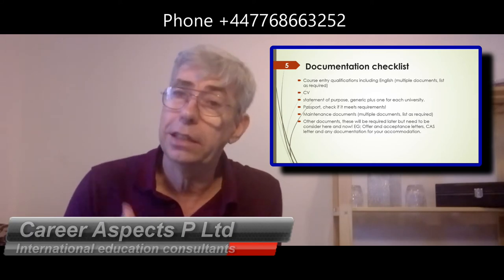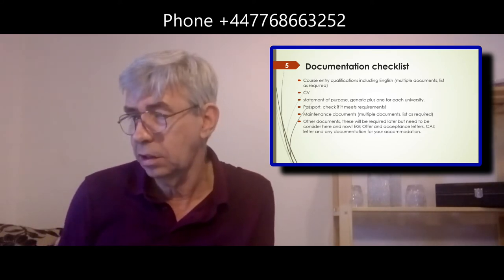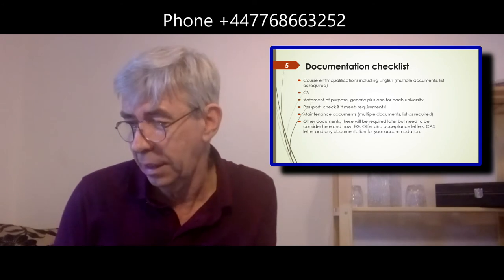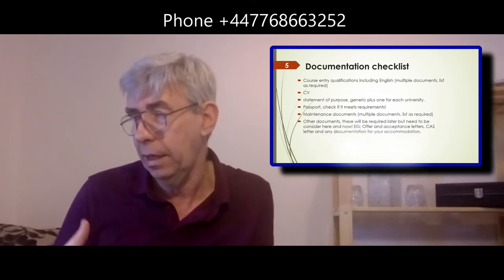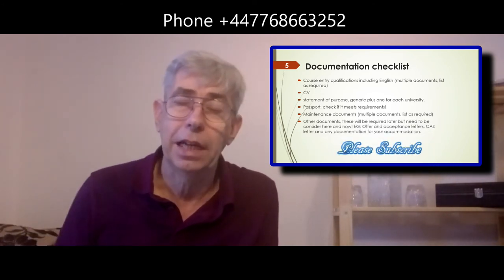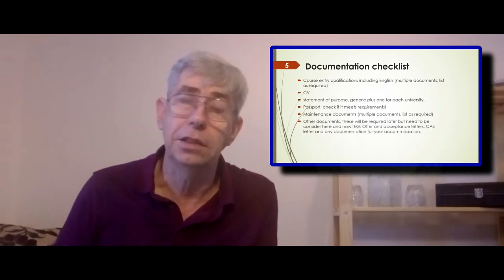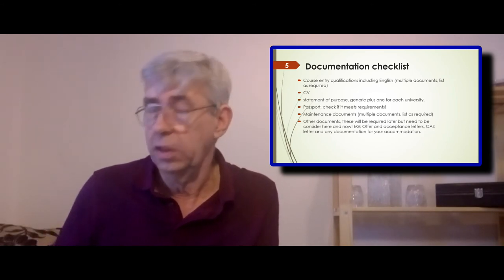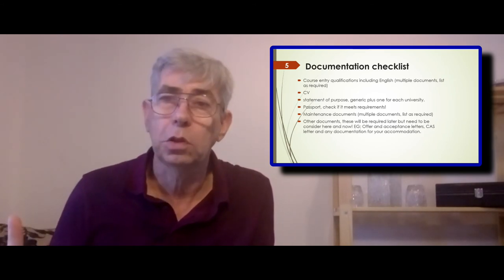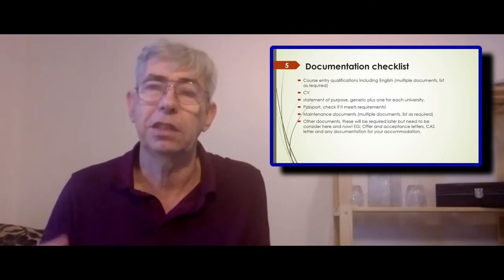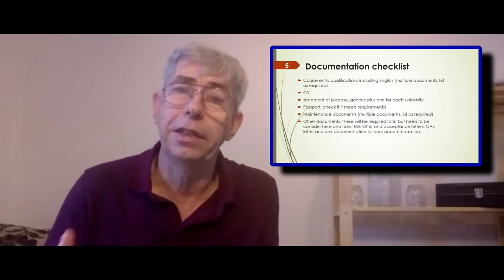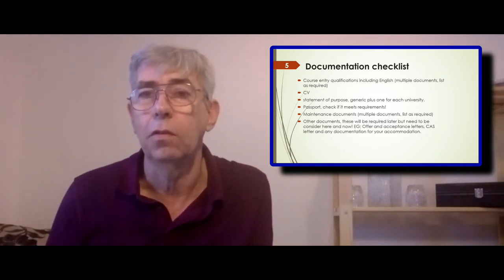There are other documents you will need too — you're going to get offer letters, acceptance letters, and your CAS letter, which you'll need for your visa application. These will all come at a later date but need to be thought about now. You may also need your flight tickets and accommodation documentation. There are all sorts of documentation — list it, keep a list of it, and make sure you've got it so that you don't get to the point where you're missing something.